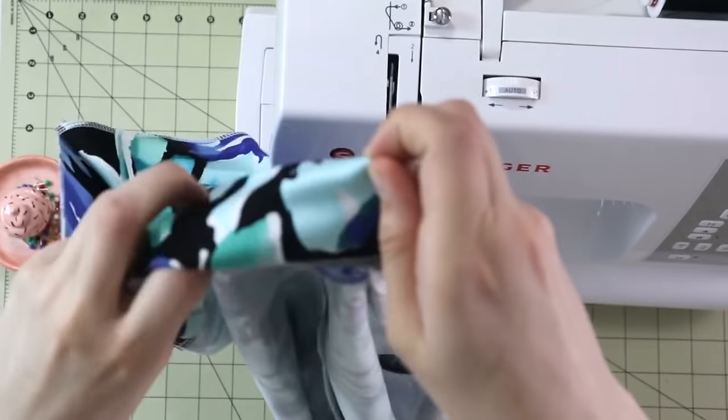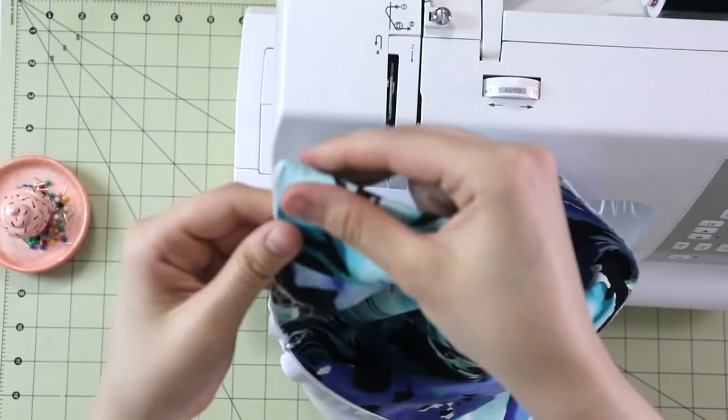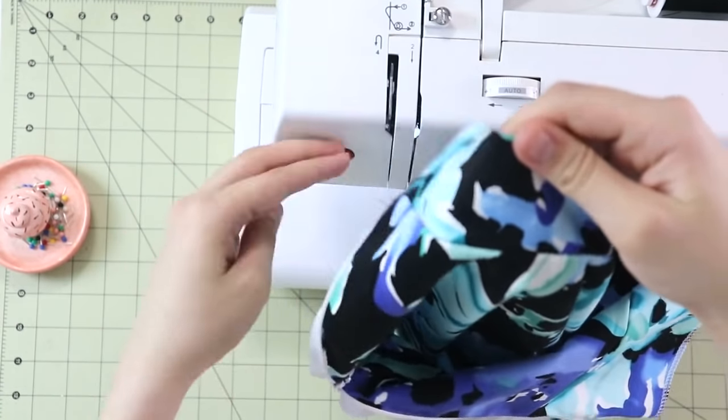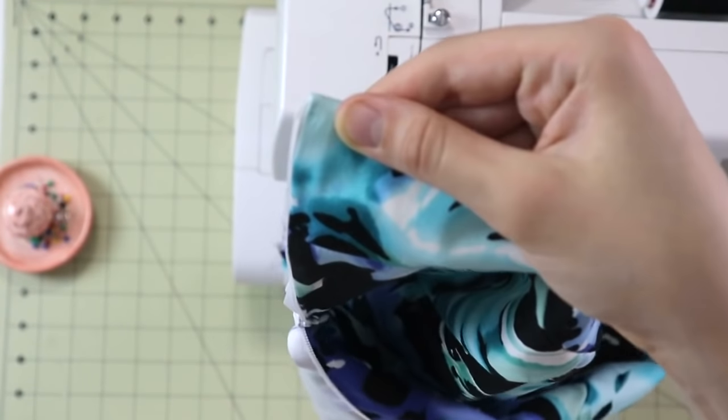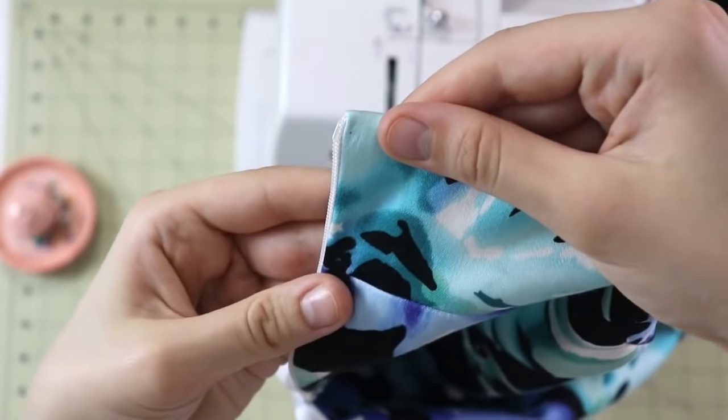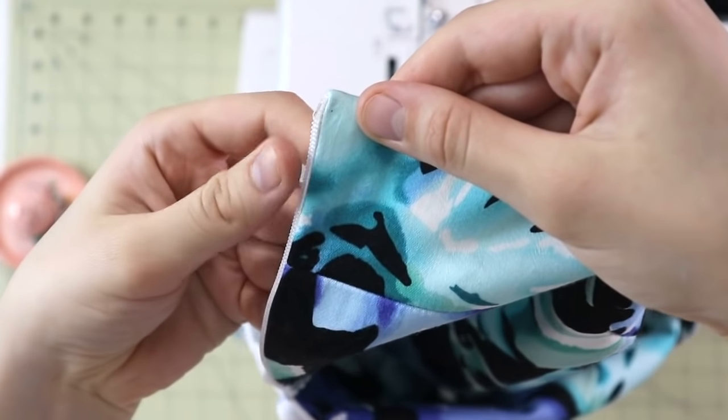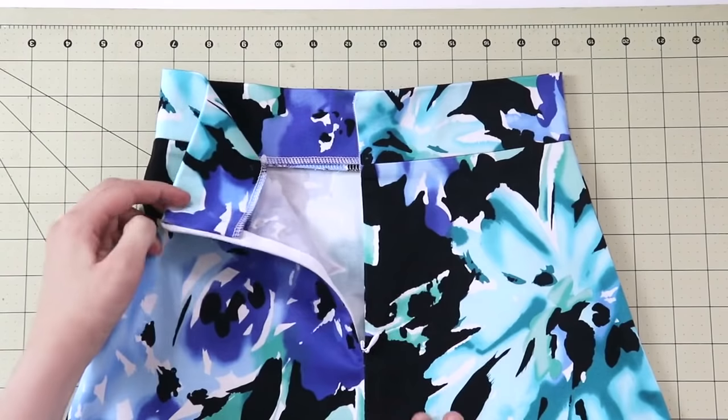You will repeat the same steps for both sides of the waistband, and once you turn them right sides out, it will look like this. And I did not snip anything in the corners. Everything turned out nice and neat like this, and sharp corners as well as you can see.